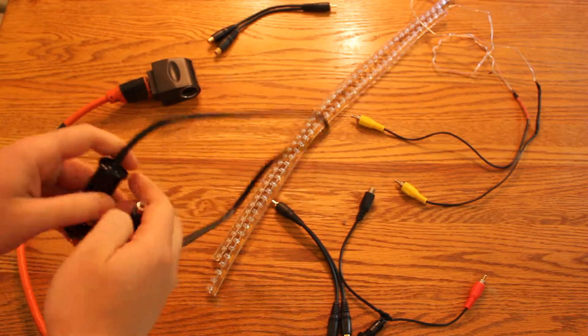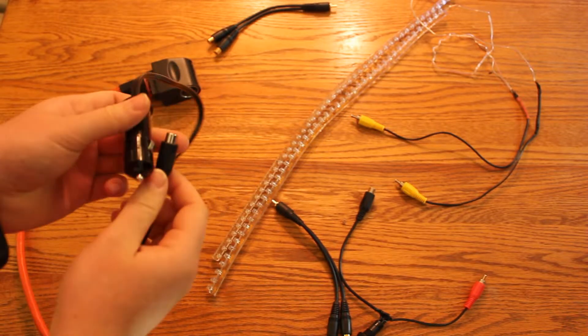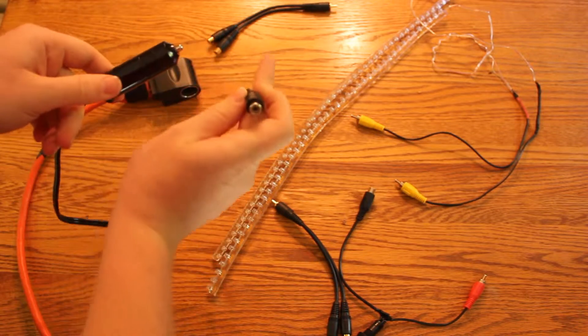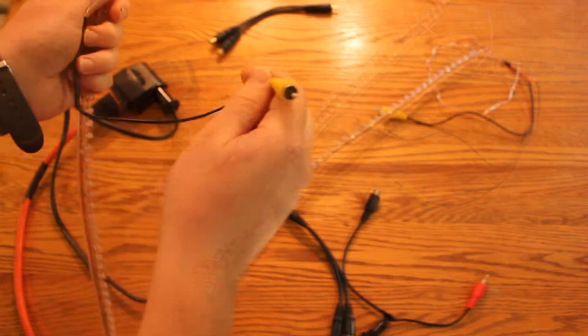The first thing is this cigarette adapter mounted to an RCA female. The female in the middle is the positive, which is inside the casing that you have to strip.